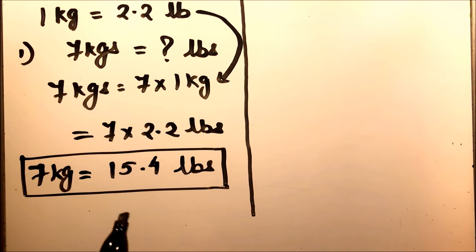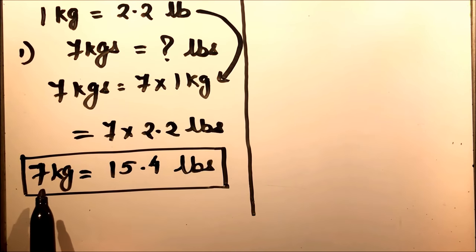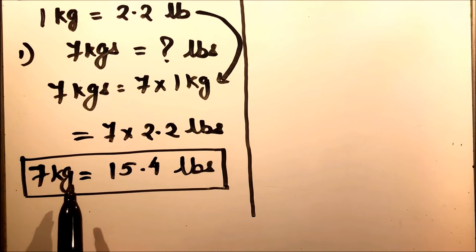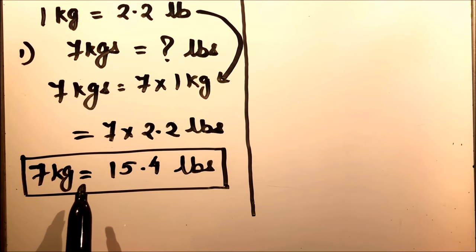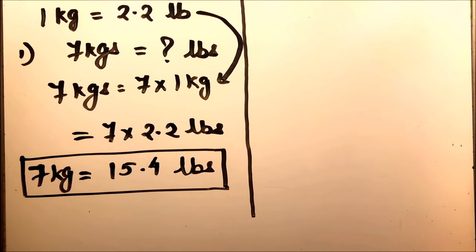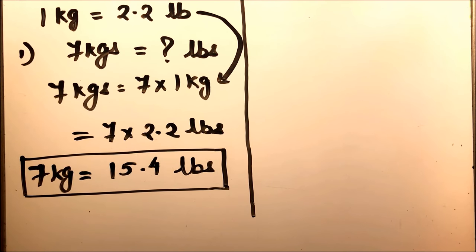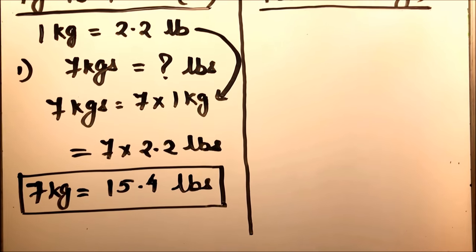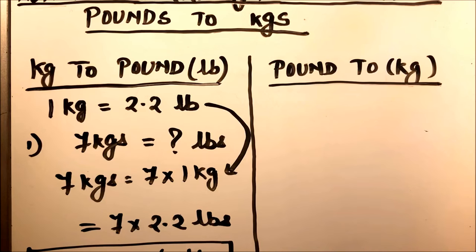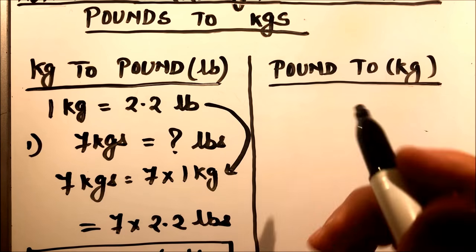We see that pounds is approximately double the value of kilograms. So if you want a rough estimate, you can estimate it by multiplying by 2. This is how you convert kilograms to pounds.